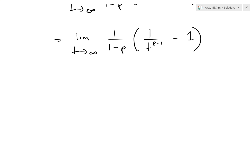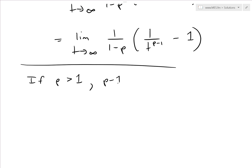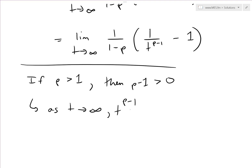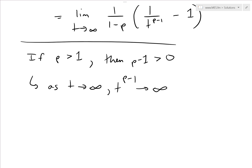Now let's consider what values of p make this limit converge or diverge. First, consider p greater than 1. Since p is greater than 1, p minus 1 is greater than 0. That means as t approaches infinity, t to the power of (p minus 1) approaches infinity as well — and so 1 over t to the (p minus 1) approaches 0.